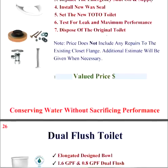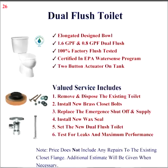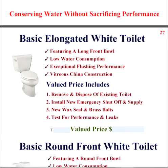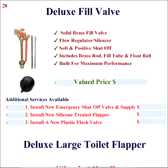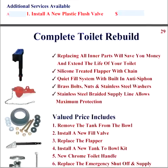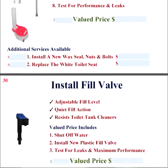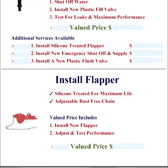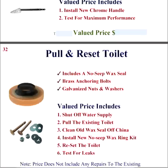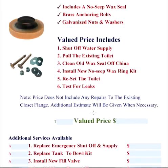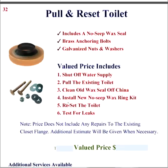Our toilet section for install offers the Toto Drake Dual Flush and then your basic elongated and round front toilets. For repairs, we have a deluxe complete toilet rebuild, and then you can break down repairs individually as needed. We put notes where required for pulling and resetting a toilet — the price does not include any repairs to the existing closet flange, and an additional estimate will be given when necessary. This forces your technician to explain that to the customer up front.